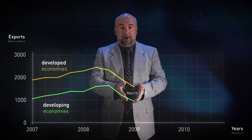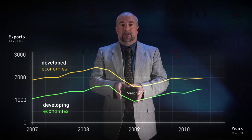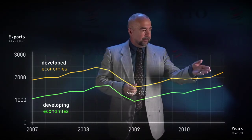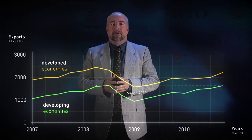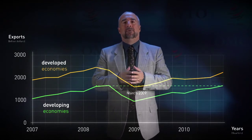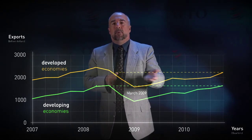After March 2009, trade started to rebound simultaneously for the developed and the developing countries. The crisis didn't create a world recession similar to the crisis of 1929. The optimistic scenario of a V-shaped recovery for developing countries proved correct. And as we see, at the end of 2010, the developing countries' exports went back to their maximum level registered before the crisis. Recovery is nevertheless taking more time for industrialized economies, and at the end of 2010, their exports were still below the pre-crisis level.